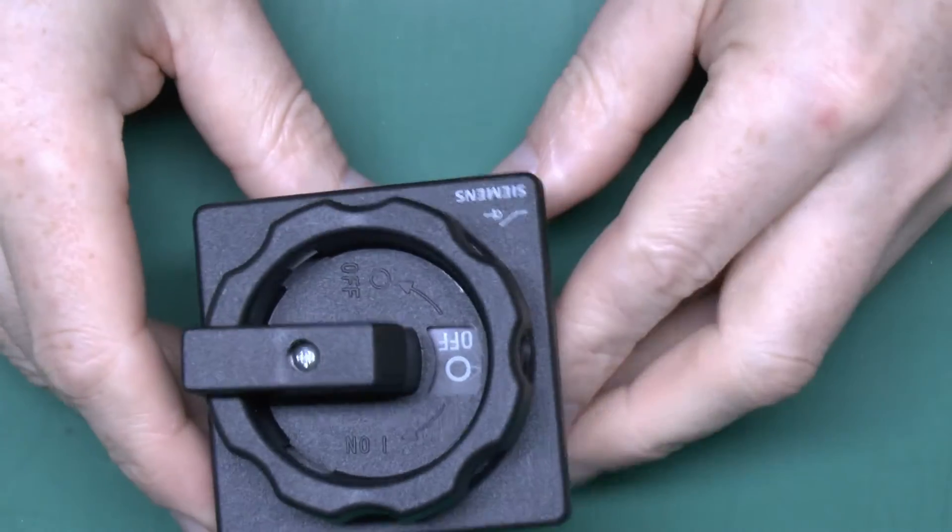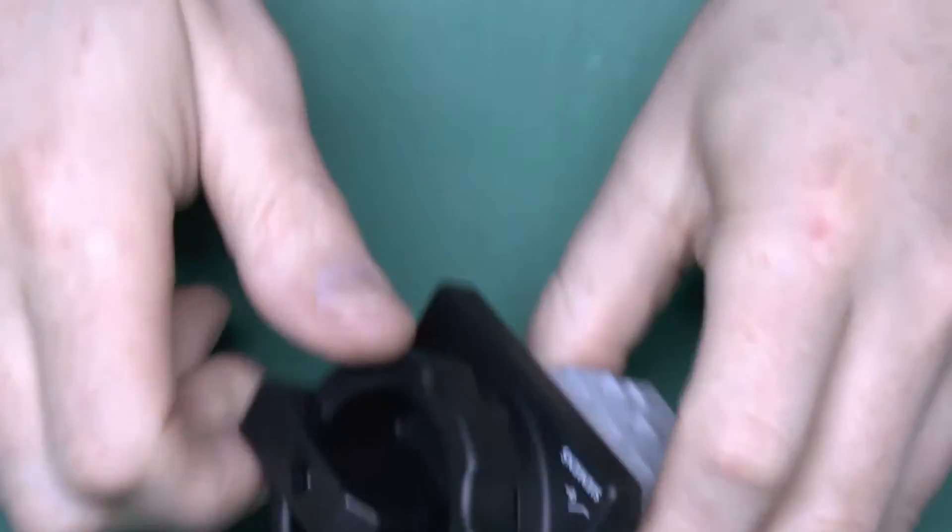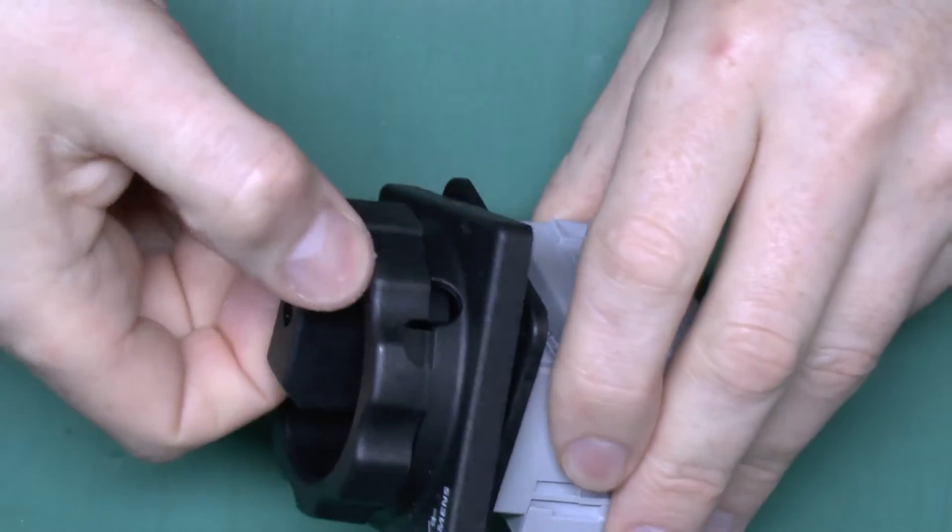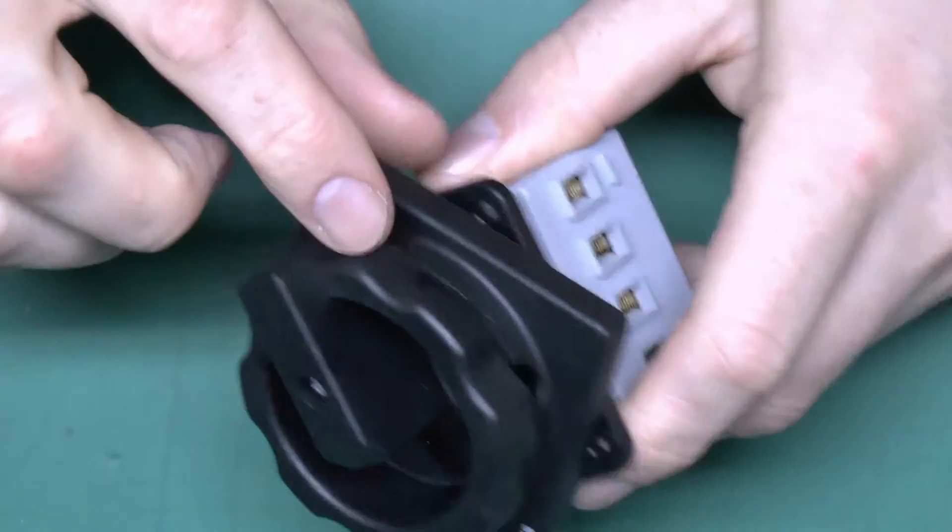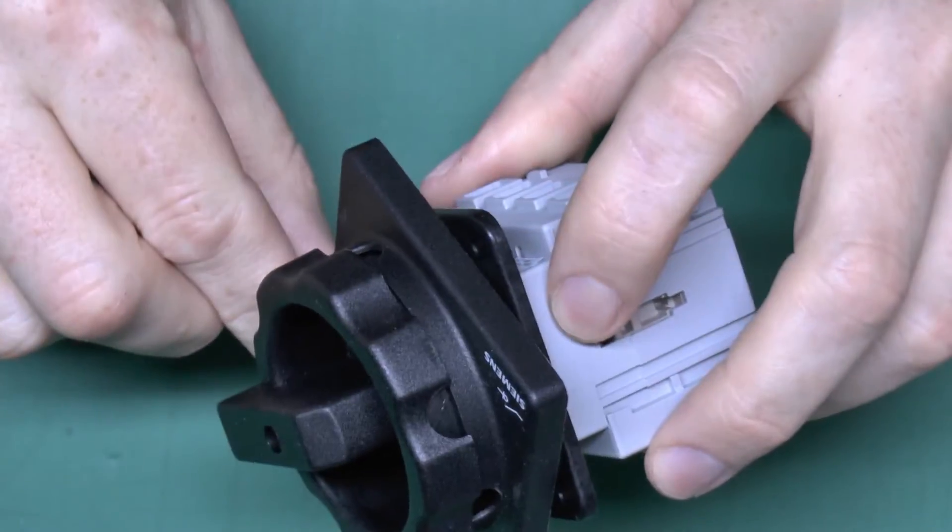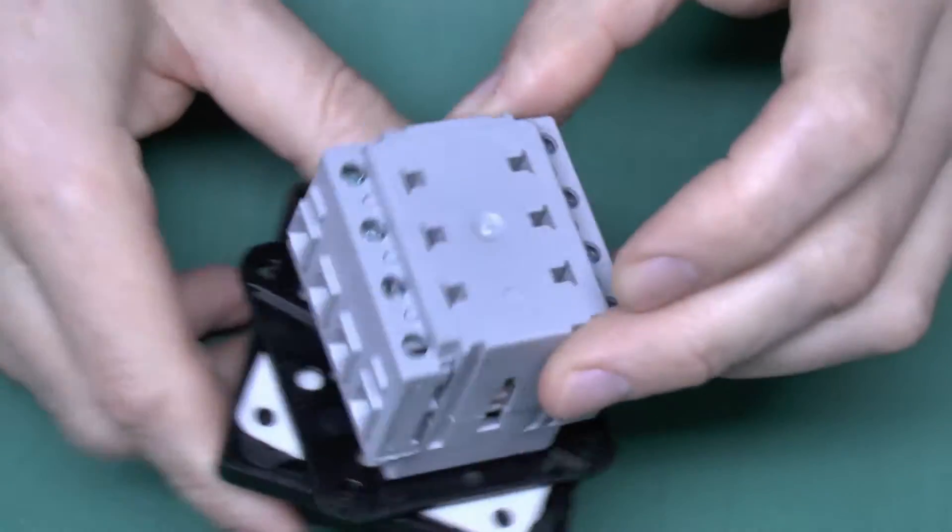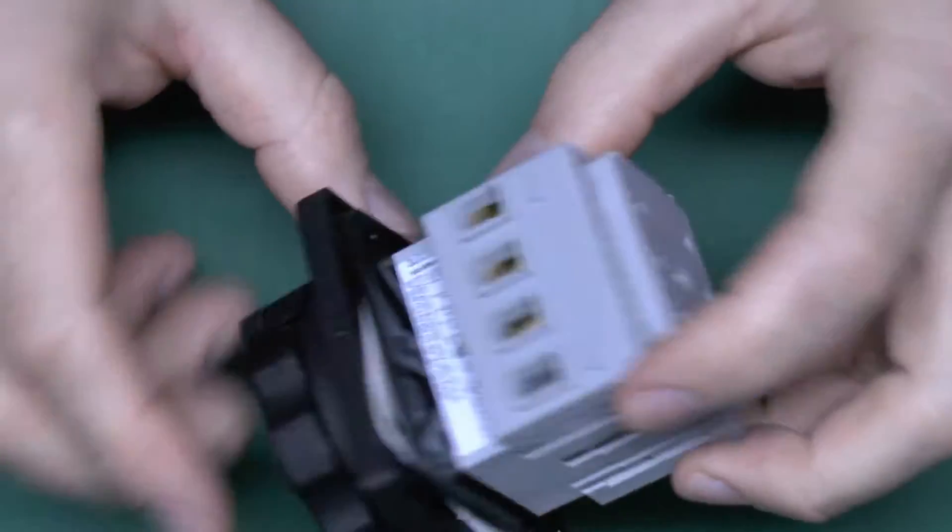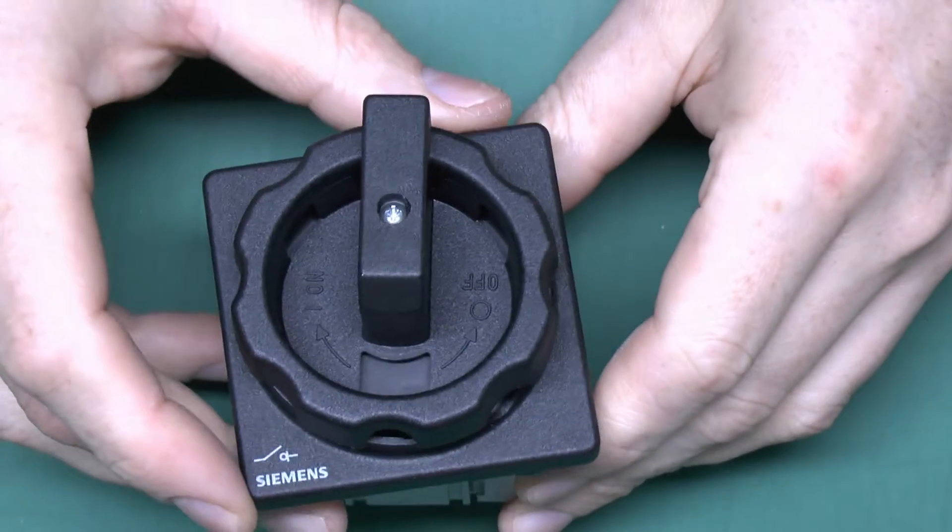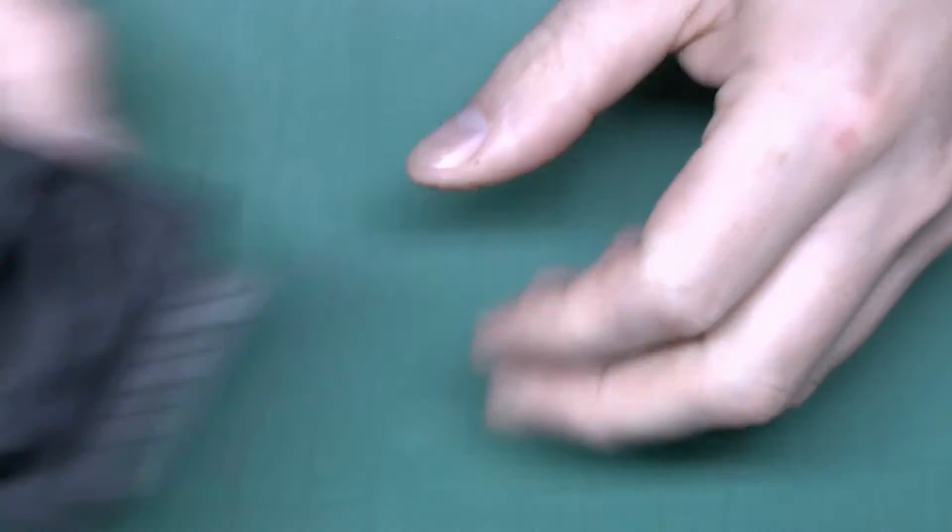Now there's a few holes in the front panel so I thought it would be a handy idea if we fitted a switch to it. This is one of these rotary type things and you can actually put a padlock through the holes to lock it in position as well. It's actually a 3 pole switch but we'll just be using it as a 2 pole switch in this application.